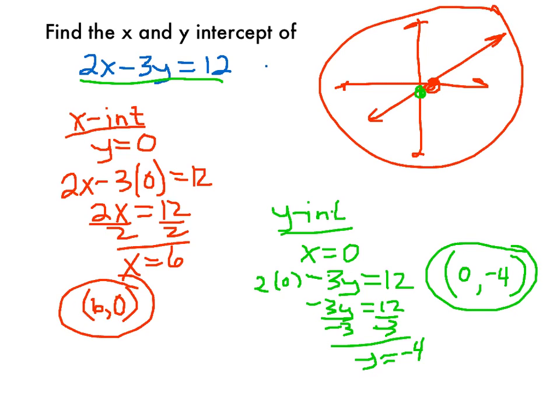So actually, the graph of this isn't so bad, because (6, 0), if I were to plot that, that would maybe be here, and (0, -4) would be here, so it's actually very similar.